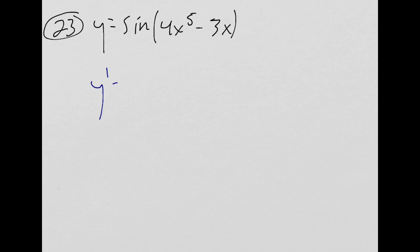So my y prime is derivative of this, which is 20x to the 4th minus 3. And I'm going to put that in parentheses like this because it's going to need to get multiplied by the next part.